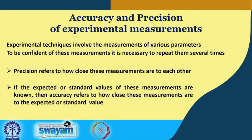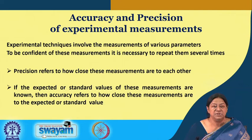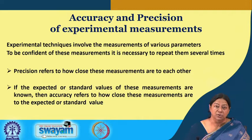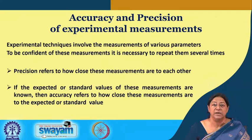If we talk about accuracy and precision, when we conduct a specific experiment, the technique is going to involve measurements of various parameters — whether it is the volume of the sample we take, the temperature we are measuring, or the pH we are looking at. To be confident of these measurements, we have to repeat them several times so that they are reproducible. If I know I have to measure a volume of 10 ml and I get 10 ml, then I am getting an accurate measurement.